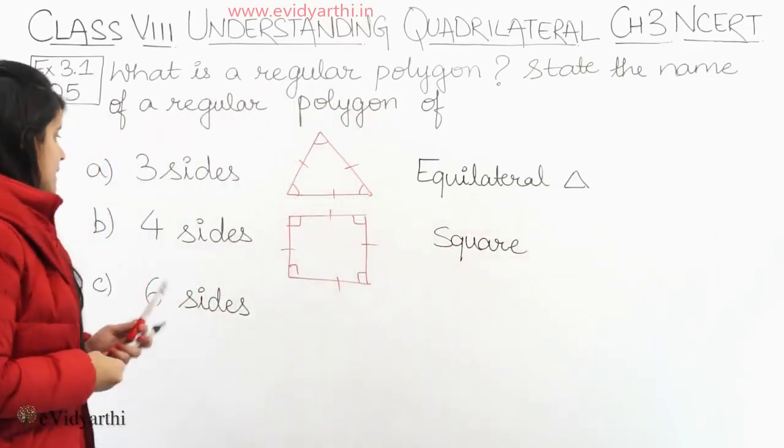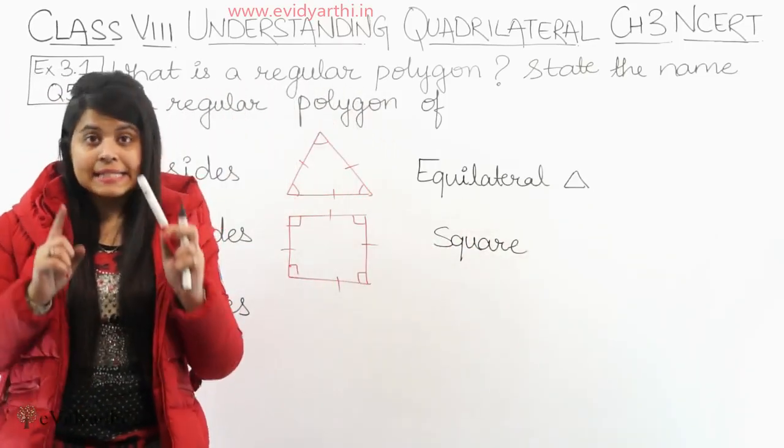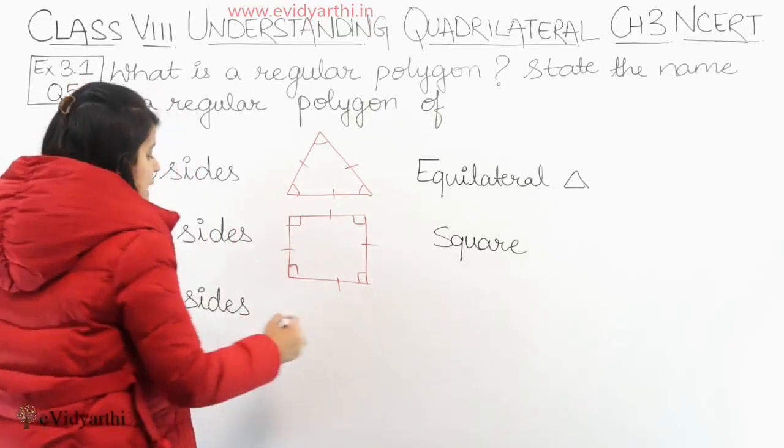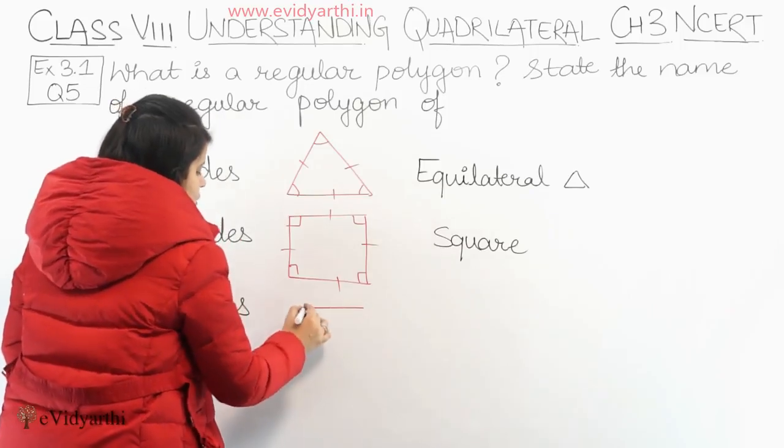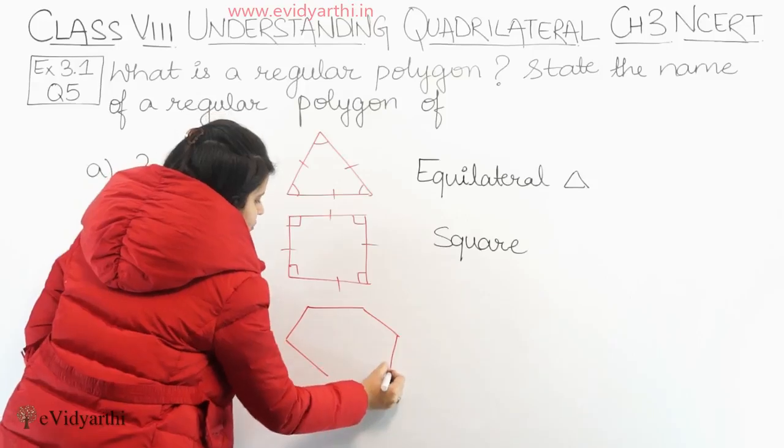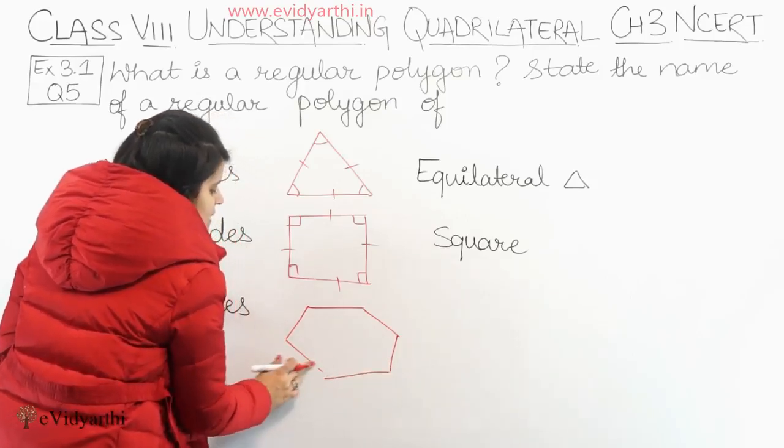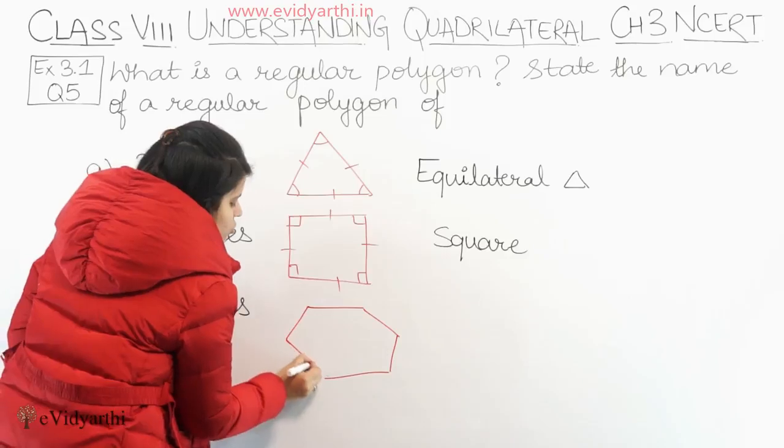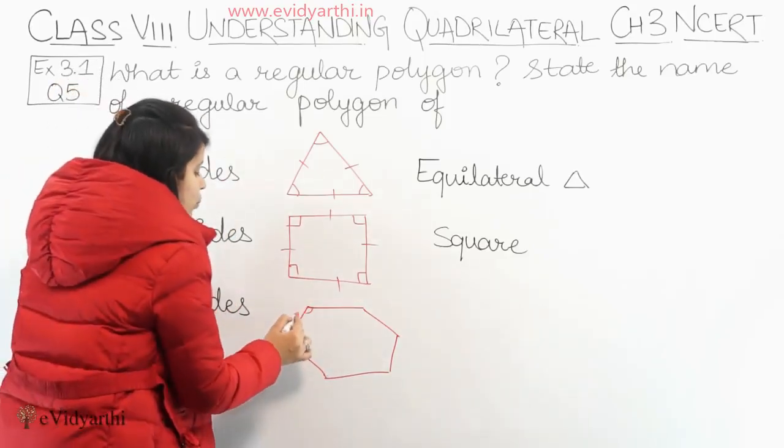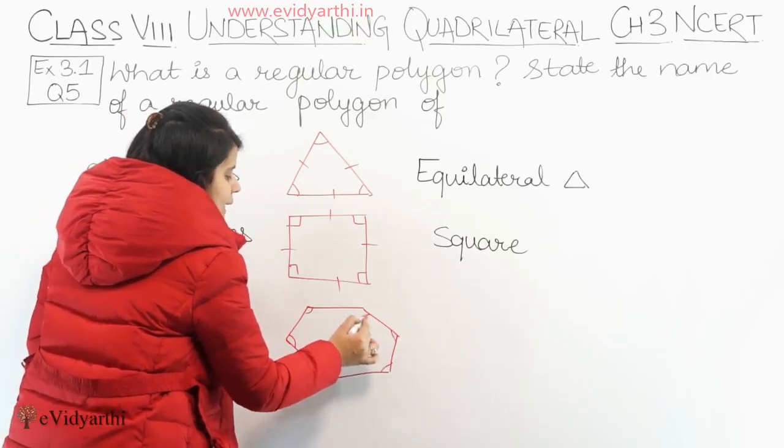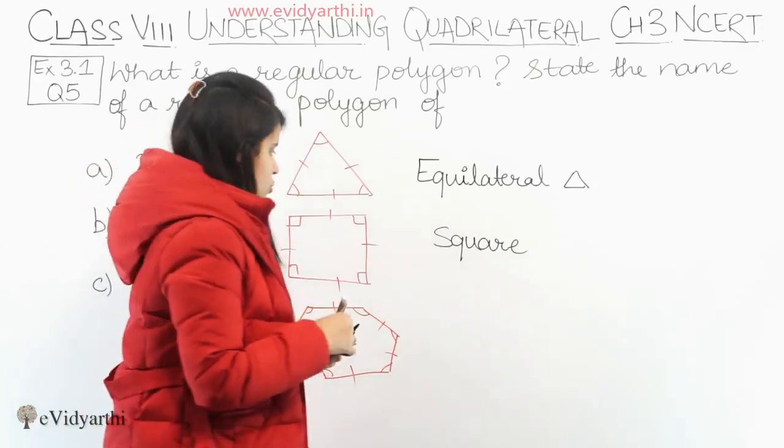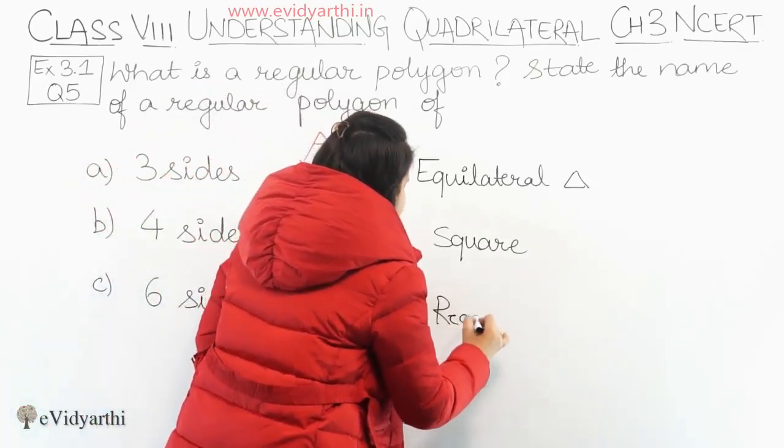Next we have six sides. A polygon with six sides can be a regular hexagon, because a hexagon has six sides: one, two, three, four, five, six. Its angles are all 120 degrees. So we can say that all the angles are equal and also all the sides are equal. So the answer is regular hexagon.